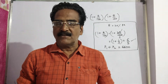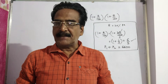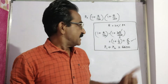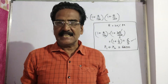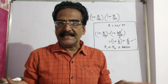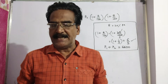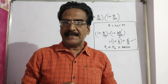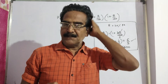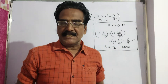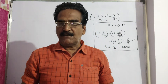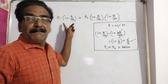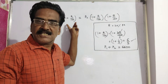Hi friends, good morning. Please look at the next problem in compound interest. A loan of rupees 6600 is to be repaid in two annual installments at 20 percent per annum compounding rate of interest. What is the value of each installment?